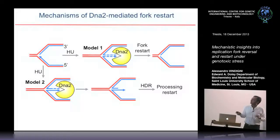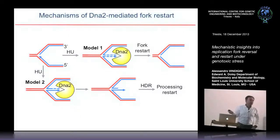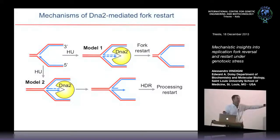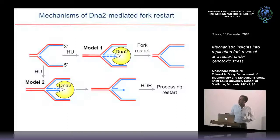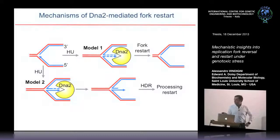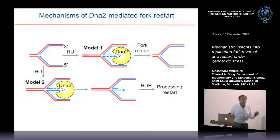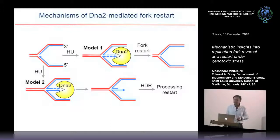We believe DNA2 preferentially degrades one strand, creating flap substrates that can be resolved by a homology-directed repair-like mechanism. Evidence for this comes from accumulation of RPA32 foci in this genetic background — RPA32 binds single-stranded DNA, suggesting single-stranded intermediates consistent with this mechanism. This work is still in progress and we hope to finish in a few months.